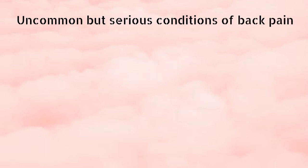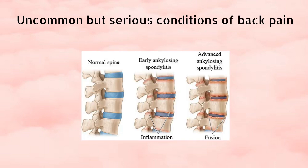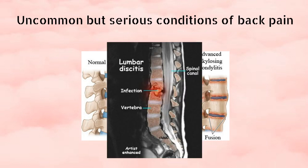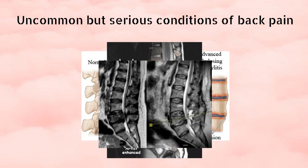Certain uncommon but serious conditions causing back pain include inflammatory diseases like ankylosing spondylitis or arthritis, infection of the spine involving discs, bones, or soft tissues such as tuberculosis, and tumors of the spine which may originate from the spine or migrate from other regions affected by cancer.